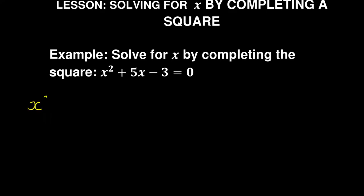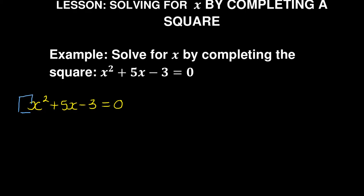We are given x² + 5x - 3 = 0 and we need to complete the square. First, you must ensure that the coefficient of x² is 1. In this case it is already 1, so we're good. If it were not 1 — say it was 2 — you would divide every term by that number first. Since it's already 1, we proceed by taking the -3 to the other side.